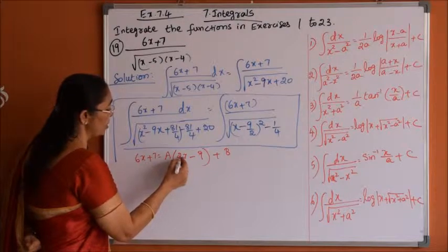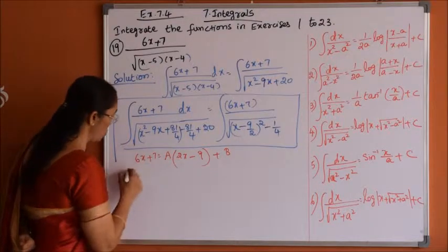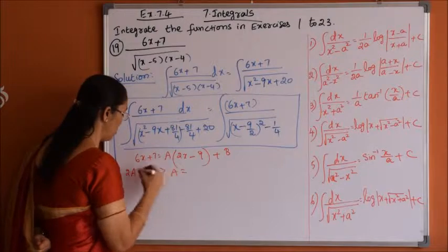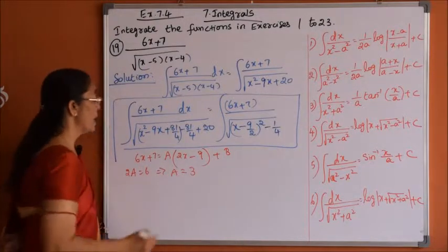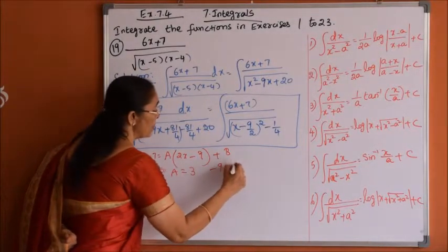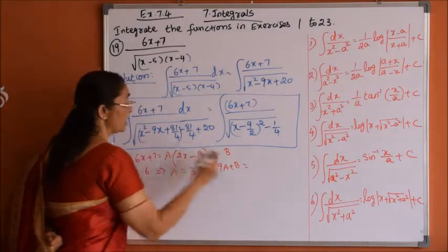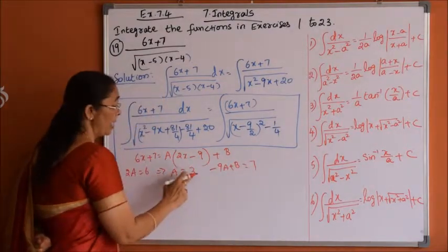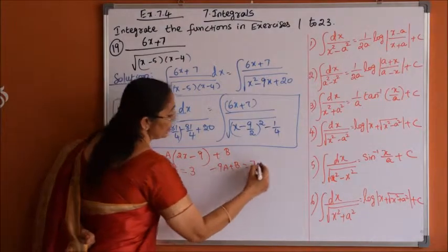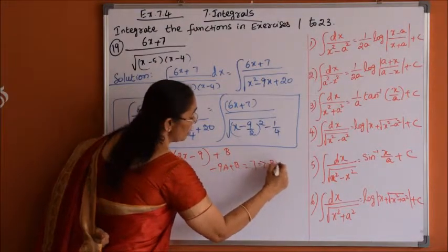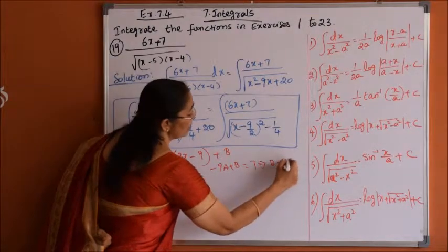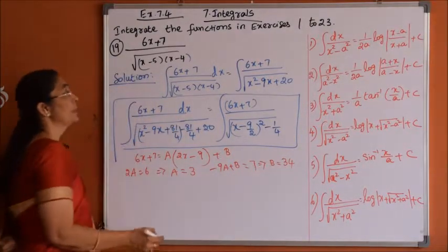Our aim is to find a and b. Comparing coefficients of x: 2a equals 6, so a equals 3. Comparing constant terms: minus 9a plus b equals 7, and with a equal to 3, that gives minus 27 plus b equals 7, so b equals 34.